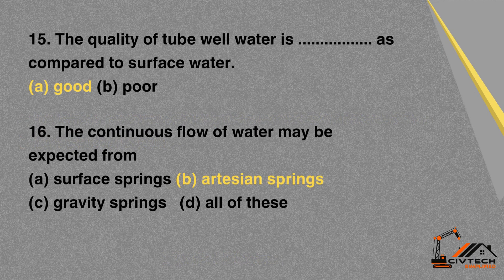MCQ 15: The quality of tube well water as compared to surface water is — A. Good. B. Poor. Correct option: A. Good.